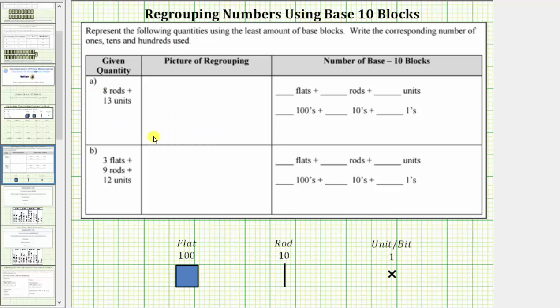So going back to our work, to picture the regrouping, we'll use the notation shown below, where a small x equals one unit, a small segment represents one rod, and a small square represents one flat. So because we now know that eight rods plus 13 units equals nine rods plus three units, we'll picture nine rods and three units.